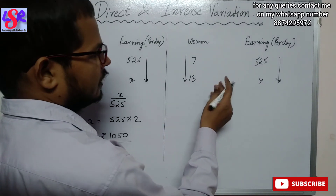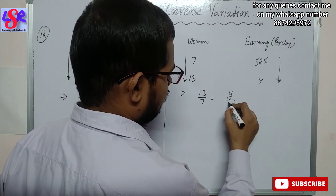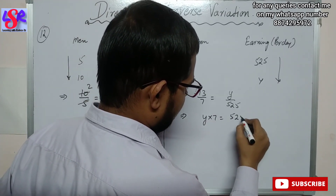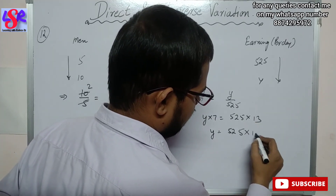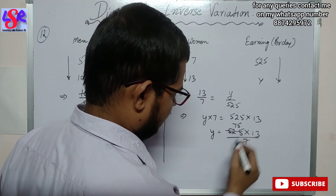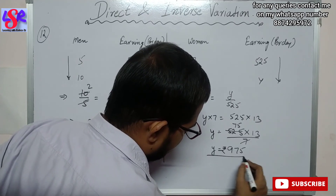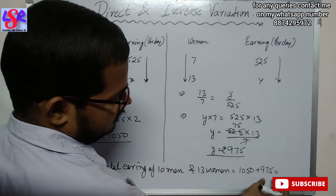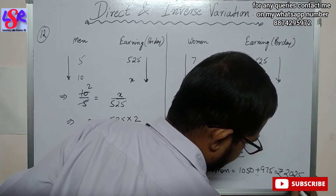For the women, we write: 13 upon 7 equals to y upon 525. Cross multiplying: y into 7 equals to 525 into 13, so y equals to 525 into 13 upon 7. Simplifying — 525 divided by 7 is 75, times 13 — y equals to 975 rupees as the earning of 13 women. Now the total of 10 men and 13 women equals to 1050 plus 975, that is rupees 2025 as the answer.